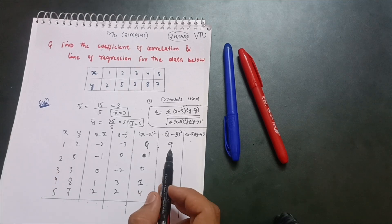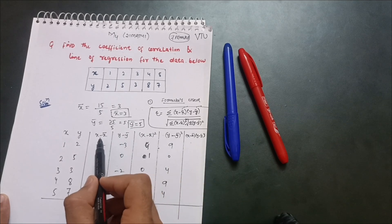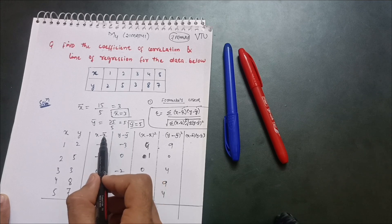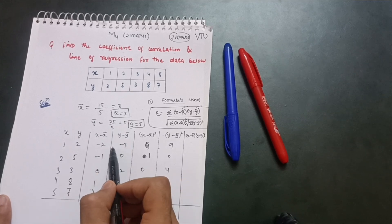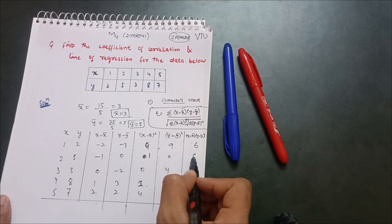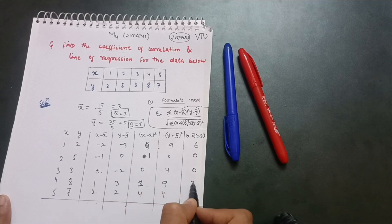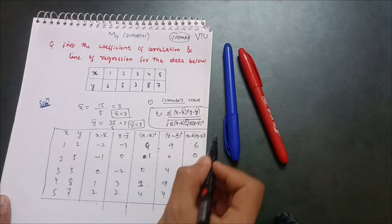For the product column (x minus x̄)(y minus ȳ): (−2)(−3)=6, (−1)(0)=0, (0)(−2)=0, (1)(3)=3, (2)(2)=4. Now we have completed the full table.